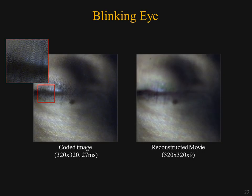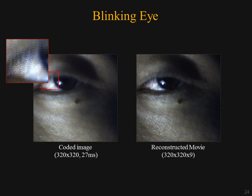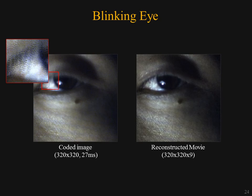In this case, we reconstruct muscle deformations during an eye blink. Here is another example of blinking — subtle muscle motion and details of skin wrinkles below the eye are recovered faithfully.